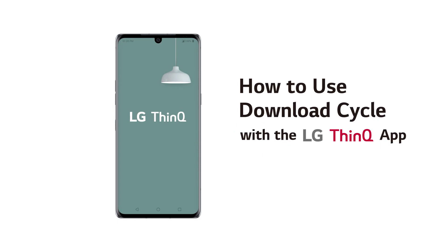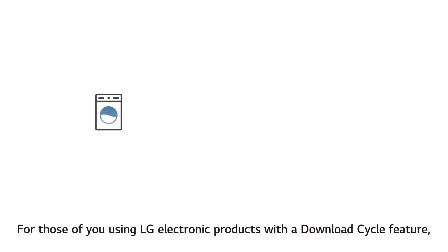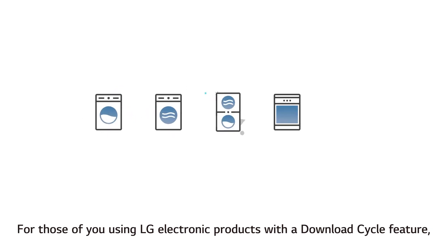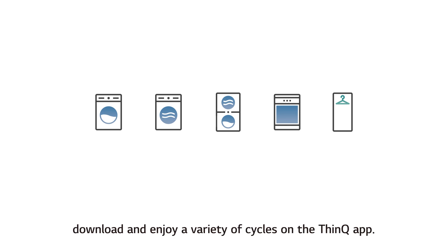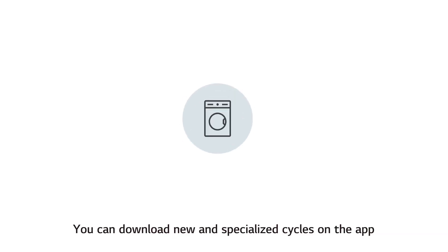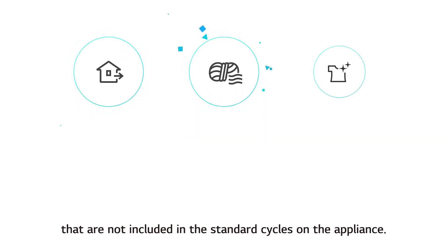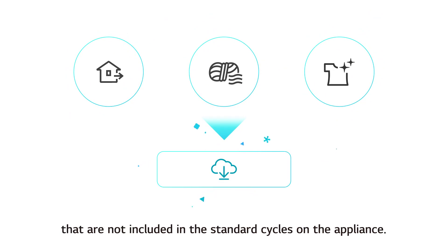How to use the download cycle with the LG ThinQ app. For those of you using LG electronic products with a download cycle feature — such as dryers, washers, dishwashers, and stylers — download and enjoy a variety of cycles on the ThinQ app. You can download new and specialized cycles on the app that are not included in the standard cycles on the appliance.